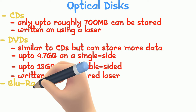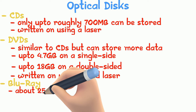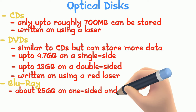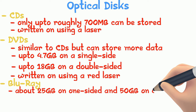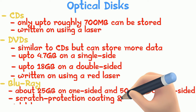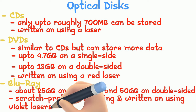Blu-rays are the newest method, storing about 25 GB on a one-sided disk and 50 GB on a double-sided disk. They have a scratch protection coating and are written on using violet laser light.